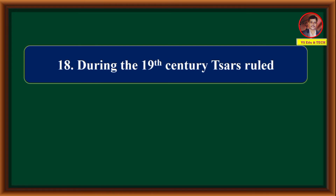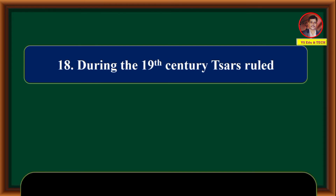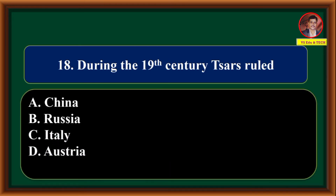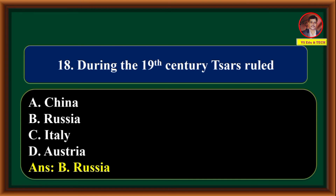During the 19th century, czars ruled — China, Russia, Italy, Austria. Correct answer is option B: Russia.